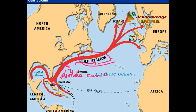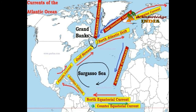A cold current from the Arctic Ocean called the Labrador Current flows along the eastern coast of Canada and meets the warm Gulf Stream near the northeast corner of the USA. The confluence of these two currents — one cold and the other warm — produces heavy fog around this region.